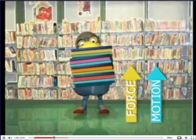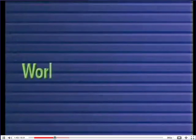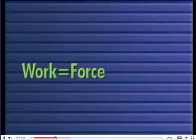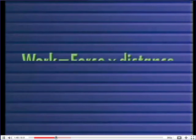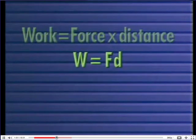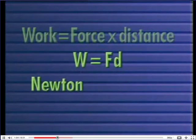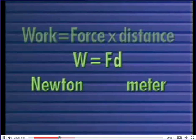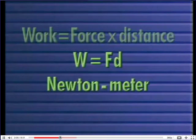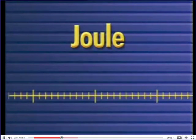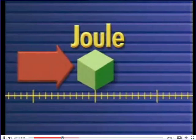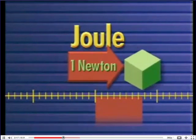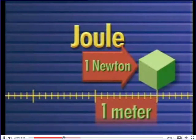When the force is in the same direction as the motion, we can determine the amount of work being done by multiplying force times distance. Force is measured in newtons and distance in meters. The product is a newton meter, or the joule — the standard unit used to measure work. One joule of work is done when a force of one newton moves an object one meter.